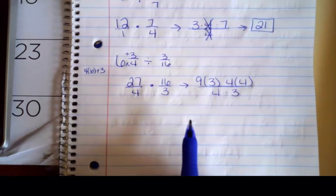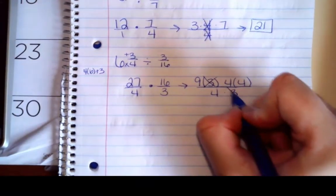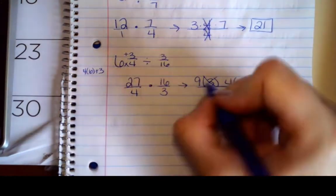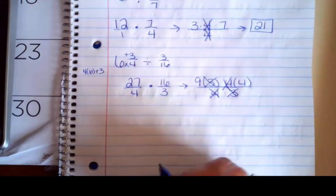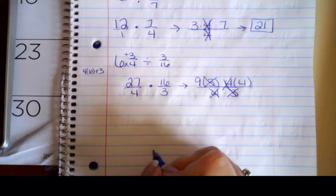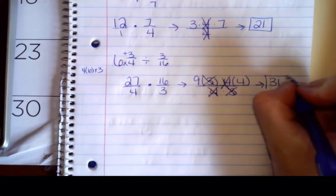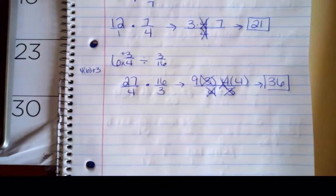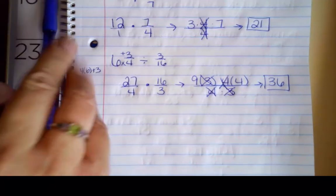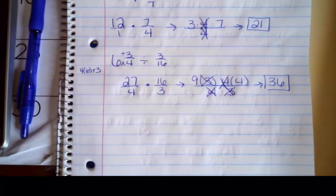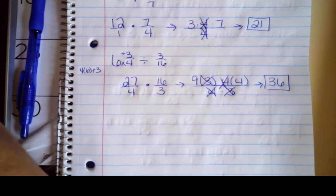Okay, so any number divided by itself. 3 divided by 3 is 1. 4 divided by 4 is 1. So that leaves me with 9 times 4 in my numerator, and that's over 1. So your answer for that is 36. So that is fractions part 1, and I will see you in the next section.